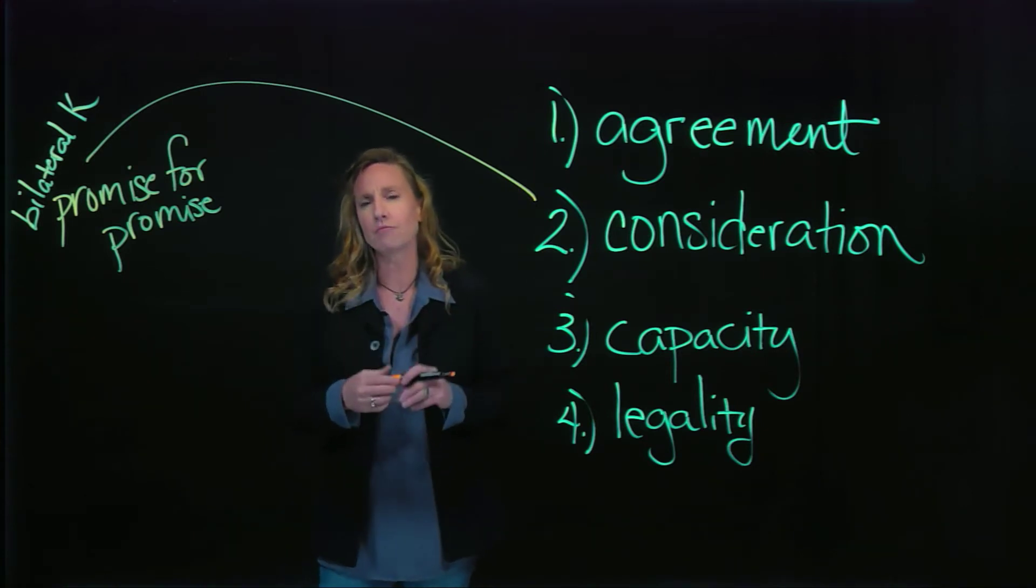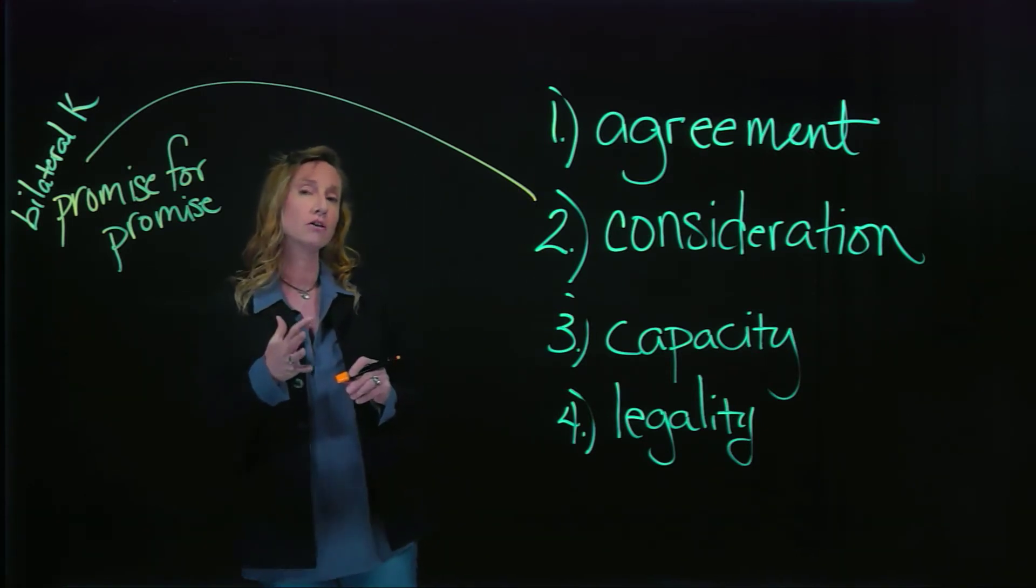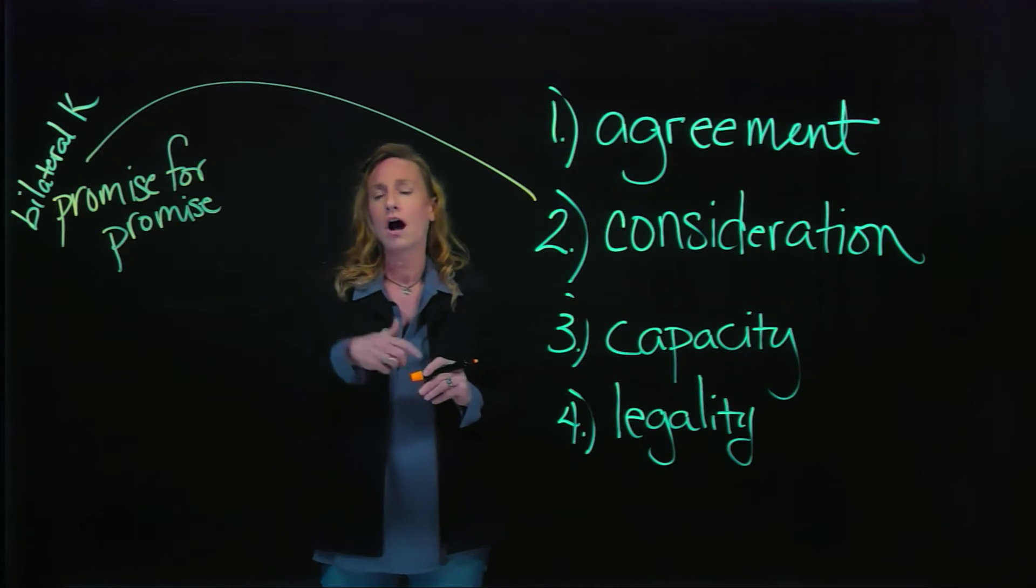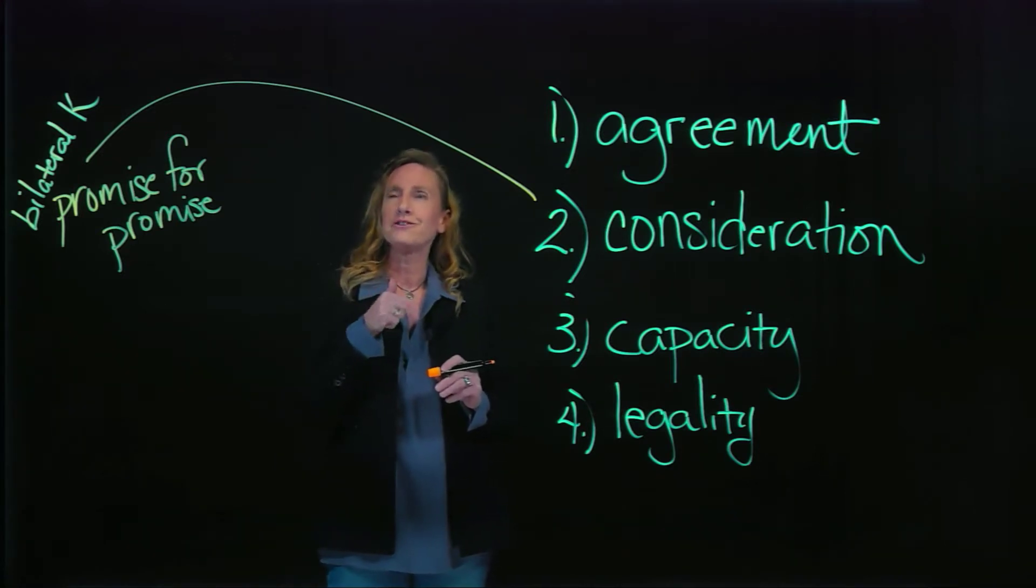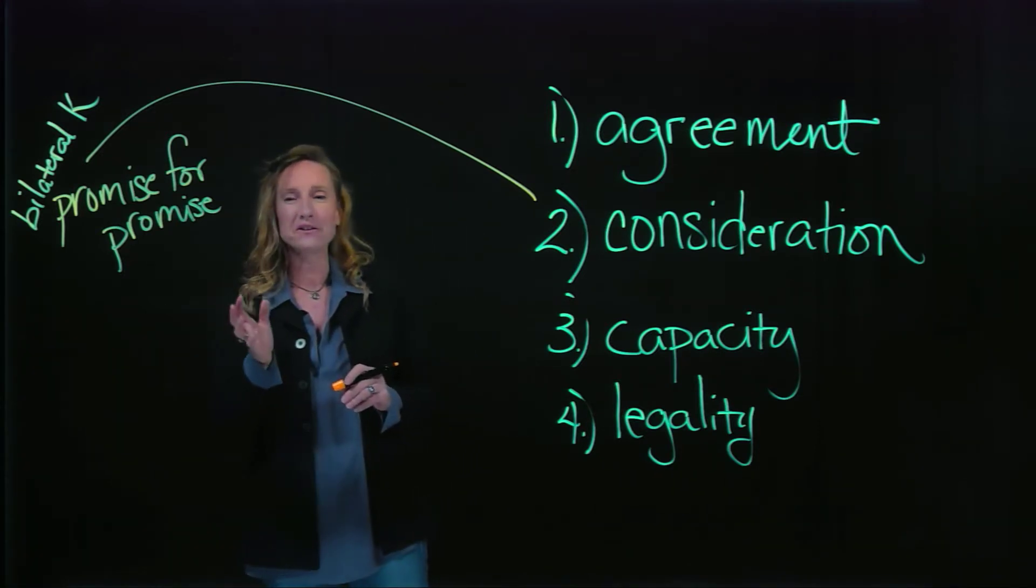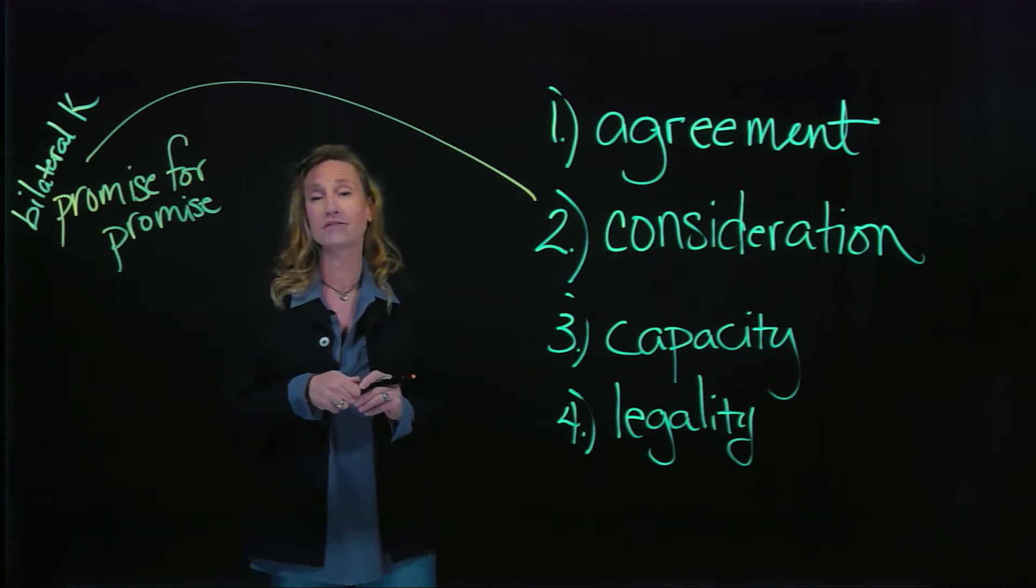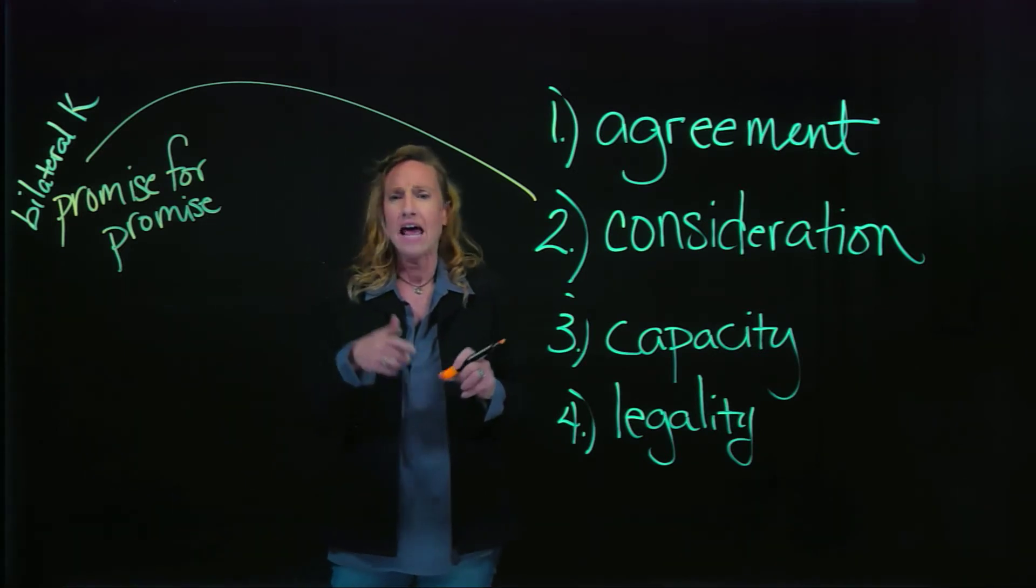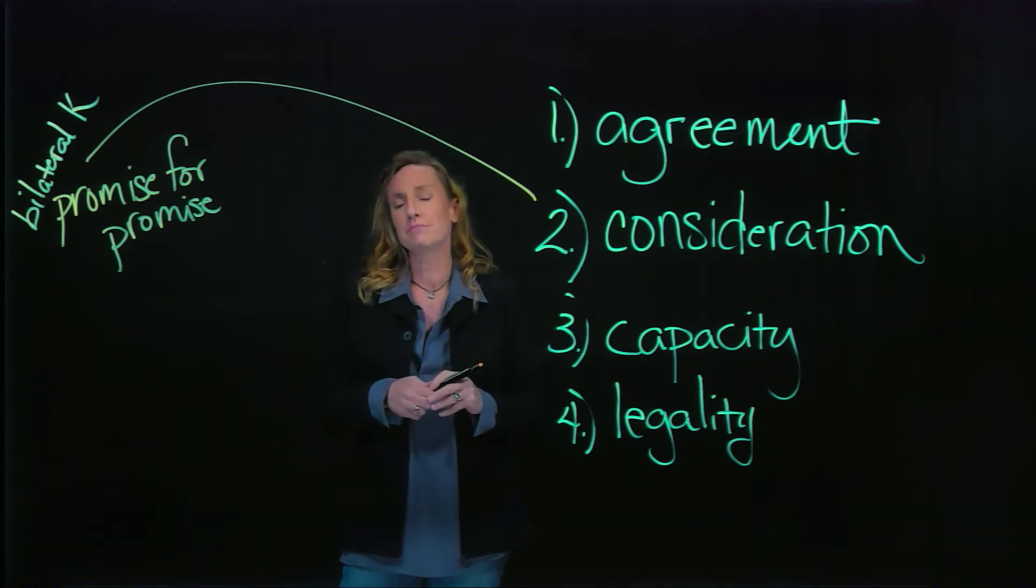For example, if I'm thinking of buying a new house and my really rich uncle says, I'll give you $100,000 to help with the purchase of that house. And then he never comes through with the money.